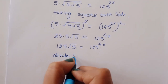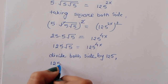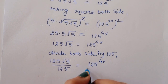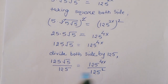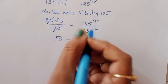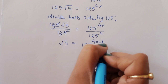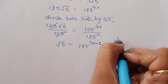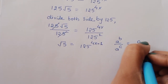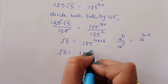Now, 25 times 5 times square root of 5 is equal to 125 raised to 4x. After cancellations, this simplifies so that square root of 5 is equal to 125 raised to 4x minus 1, where the power on the left side is 1.